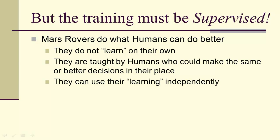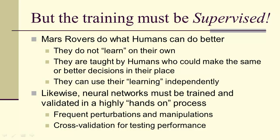So the training that teaches a neural network to do this, however, has to be supervised. So if you've got Mars rovers, then they're not actually doing something that we can't do. Humans would do what they're doing better if we were there and didn't have to worry about surviving the harsh Martian environment. They don't learn on their own. They're taught by humans who would make the same or better decisions in their place. But once they've been trained, they can use their learning independently. So in general, neural networks must be trained and validated in a highly hands-on process. Frequent perturbations, manipulations, lots of cross-validation for testing performance, and so on and so forth.